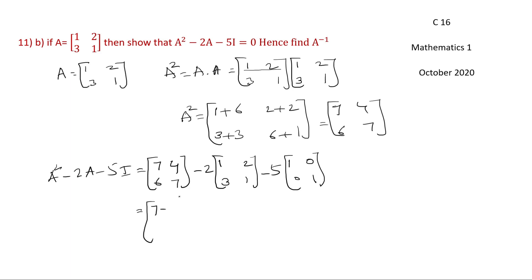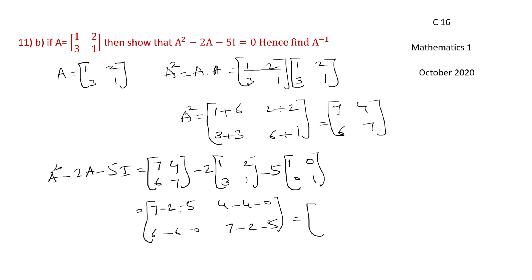Now compute A squared minus 2A minus 5I: 7 minus 2 minus 5 equals 0; 4 minus 4 minus 0 equals 0; 6 minus 6 minus 0 equals 0; 7 minus 2 minus 5 equals 0. We get the zero matrix, confirming A squared minus 2A minus 5I equals 0.